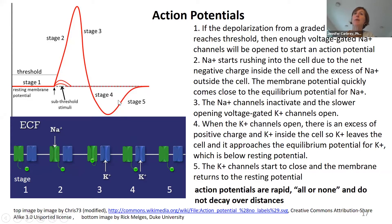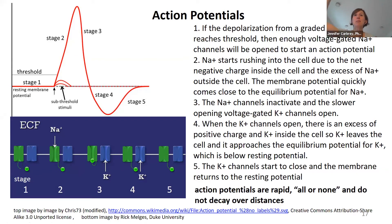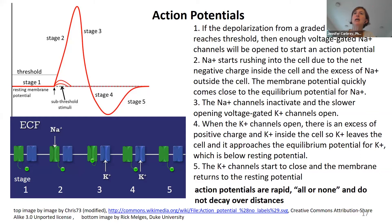In stage three, the sodium channels inactivate and finally our potassium channels have opened. Now we only have potassium channels open, so our membrane potential is going to move towards the equilibrium potential for potassium. Eventually we get down to rest, both channels close, our leak channels take over, and our membrane potential comes back to rest — no longer hyperpolarized down at the equilibrium potential for potassium. Remember the brilliance of the system: you've got two positive ions on opposite sides of the membrane, so opening one makes the membrane potential go up, opening the other makes it go down — and this makes a signal.